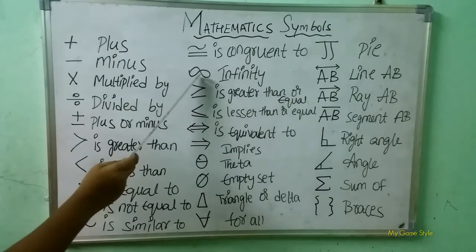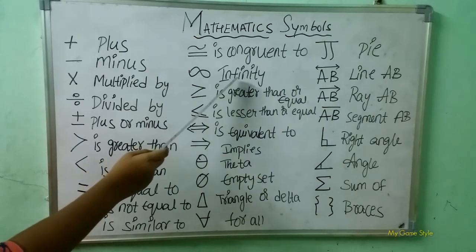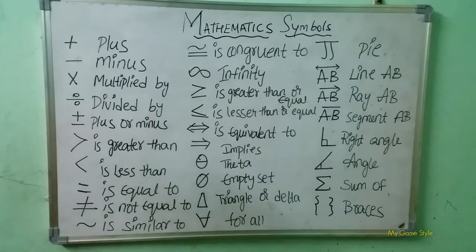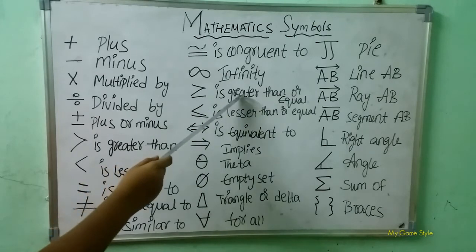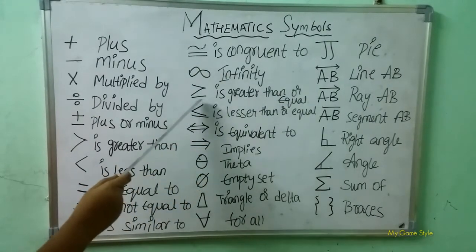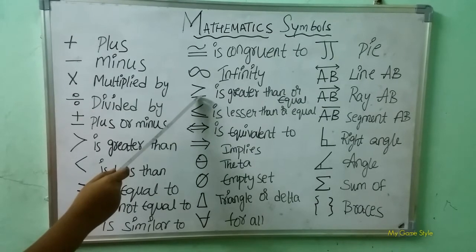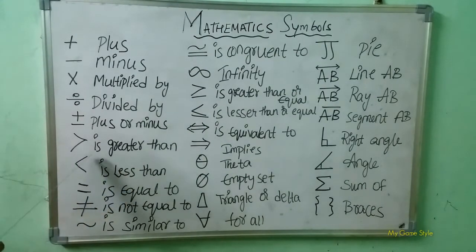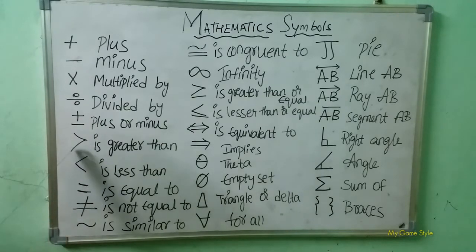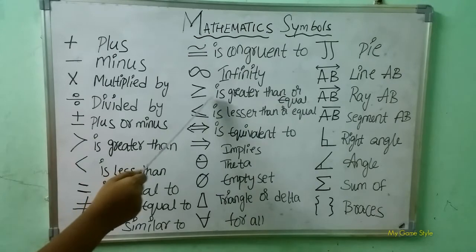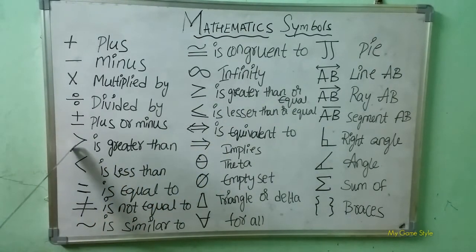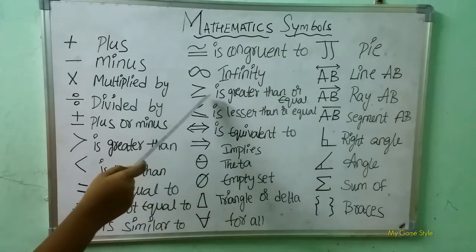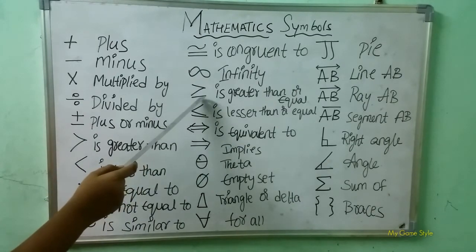Here what is this symbol children? Infinity — infinity symbol. And next, here what is this? This is a greater than or equal symbol. See here — this is only a greater than symbol, and here this is a greater than or equal. This is the difference.